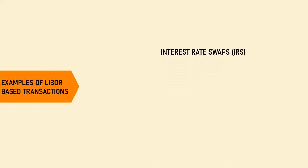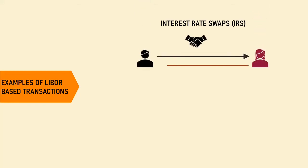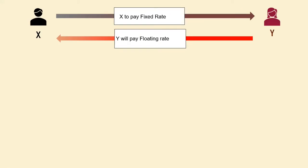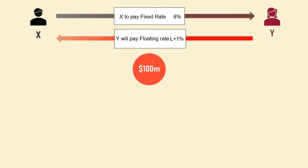LIBOR is also used to structure interest rate swaps, which are contractual agreements between two parties to exchange interest payments at specified intervals. For example, let us presume there are two individuals, X and Y. They enter into a swap whereby X will pay a fixed rate to Y and in return will receive a floating rate from Y. The fixed rate is negotiated at 8%, while the floating rate payment is agreed at LIBOR plus 1%. The notional amount is $100 million and the swap is for 3 years. In an interest rate swap, the principal amount is notional — no cash flow is exchanged on account of principal; it is just used for calculation. The exchange is only of the interest streams.